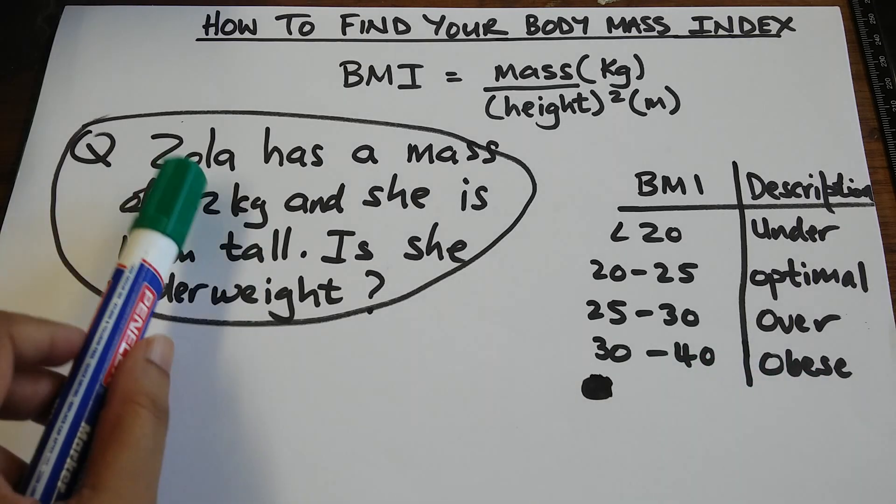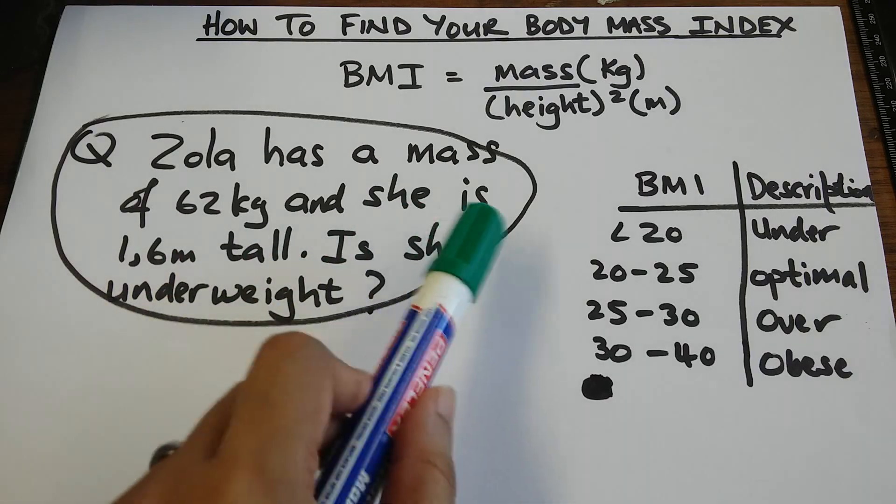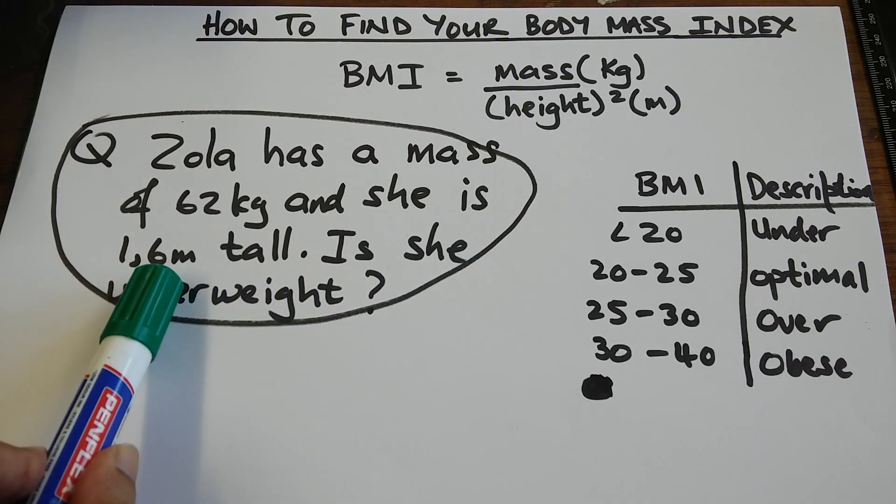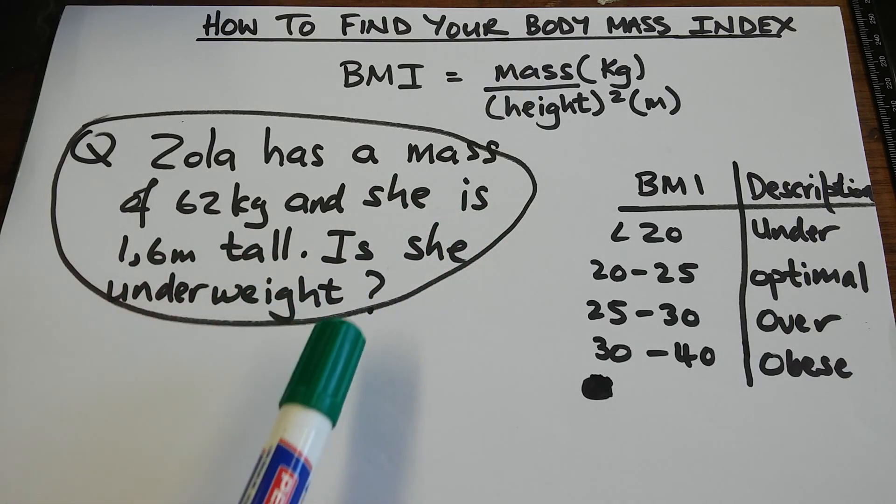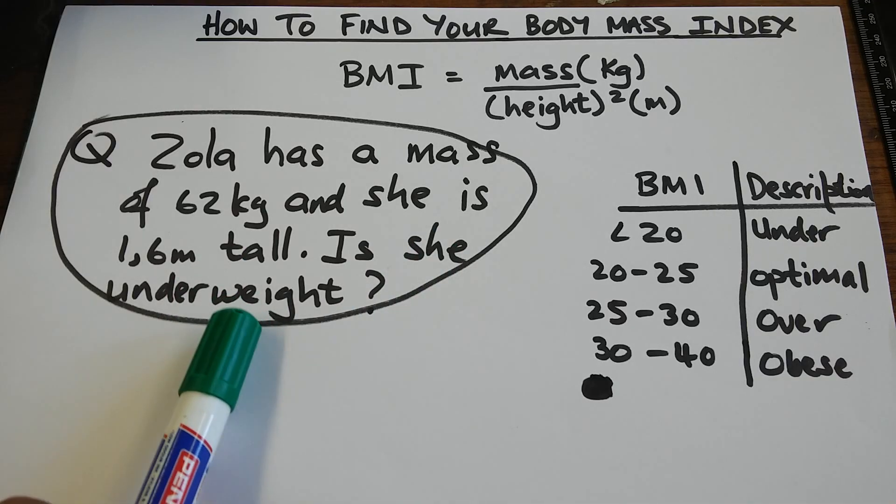So, question says, Zola has a mass of 62 kgs and she is 1.6 meters tall. Is she underweight?